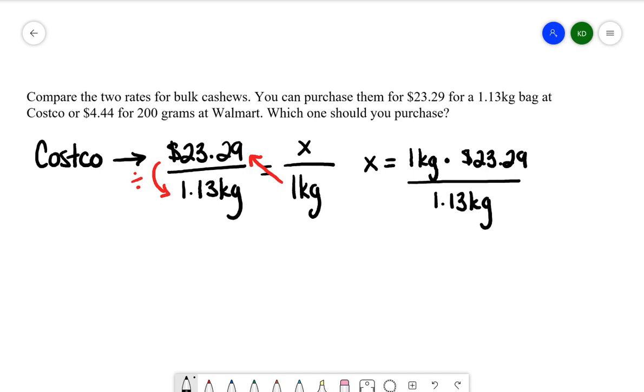You're going to notice with cross multiplying and dividing that your units are going to cancel. Kilograms and kilograms will cancel, and I'm being left with an amount in dollars. Let's plug that into our calculators. What I get is $20.61, and that's the amount I'm paying for one kilogram at Costco.